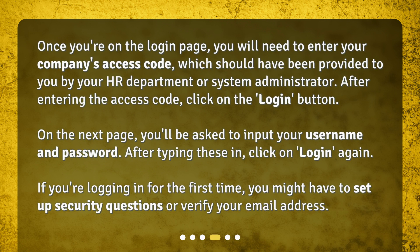How to log into UKG Pro: Once you're on the login page, you will need to enter your company's access code, which should have been provided to you by your HR department or system administrator. After entering the access code, click on the login button. On the next page, you'll be asked to input your username and password.